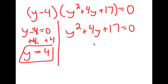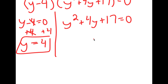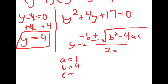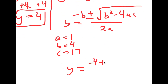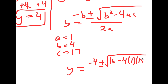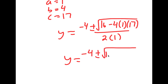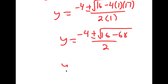For y squared plus 4y plus 17 equals 0, I can solve this using the quadratic formula, which is negative b plus or minus the square root of b squared minus 4ac over 2a. In this case a is 1, b is 4, and c is 17. So I get y equals negative 4 plus or minus the square root of 4 squared, which is 16, minus 4 times 1 times 17, all over 2 times 1. This equals negative 4 plus or minus the square root of 16 minus 68 over 2.